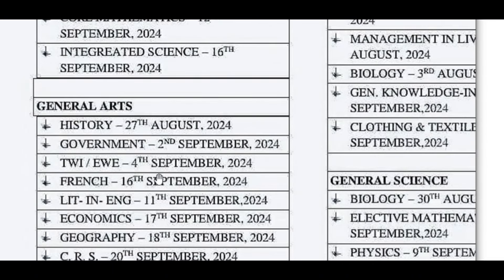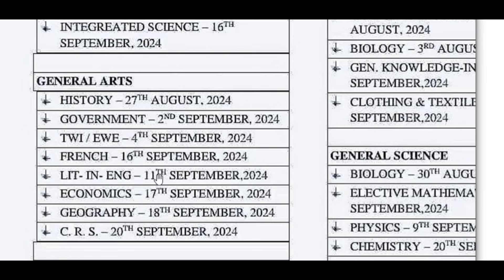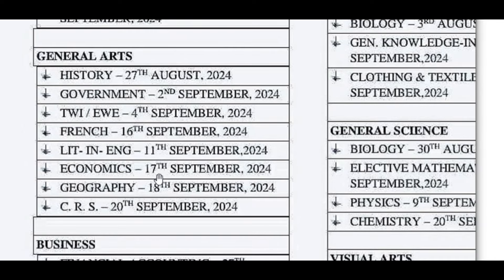For General Arts students, your papers will be: History — 27th August 2024; Government — 2nd September 2024; Twi/Akan Aware — 4th September 2024; French — 16th September 2024; Literature in English — 11th September 2024.